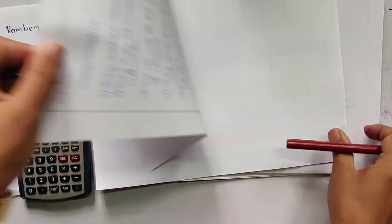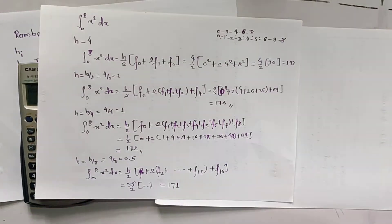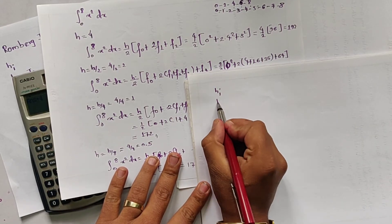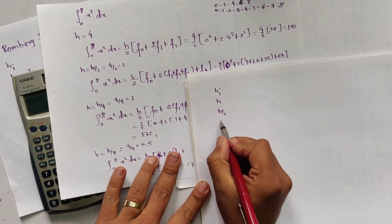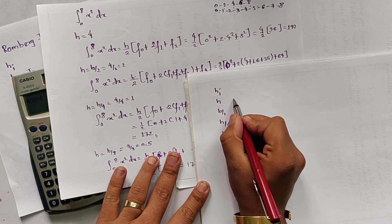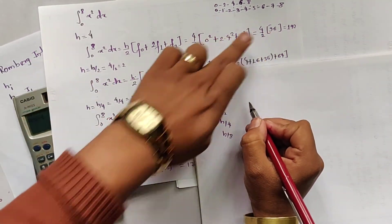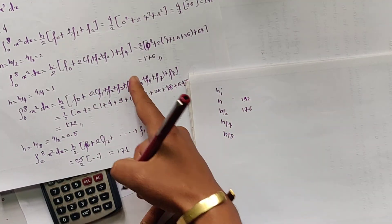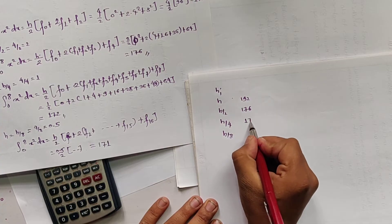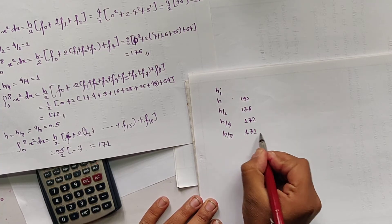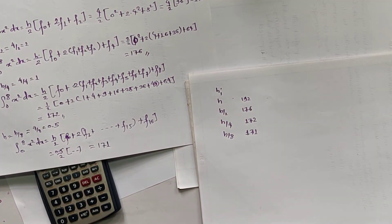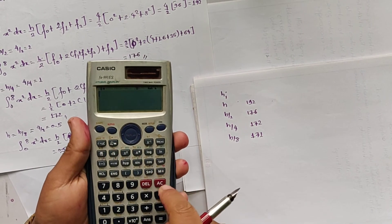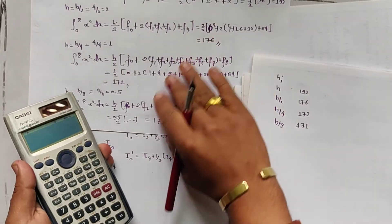Now we fill in the Romberg table. The table has columns for h, h/2, h/4, and h/8. The values are: I1 = 192, I2 = 176, I3 = 172, and I4 = 171. Now we calculate the new (refined) values using the Romberg formula.